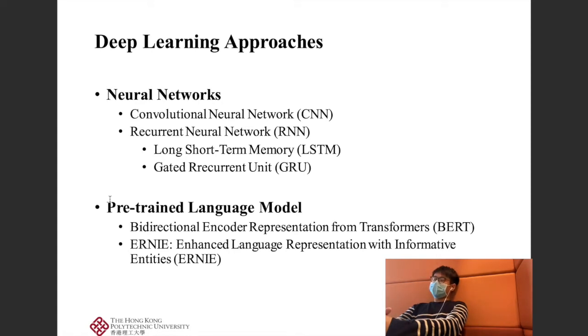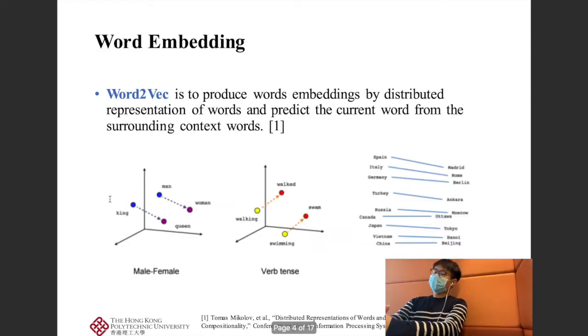In today's presentation, I will introduce two very famous RNN variations: the Long Short-Term Memory and the Gated Recurrent Unit. After that, I will introduce the pre-trained language model, which is a very useful technology developed in 2018 and is very useful for text classification tasks.